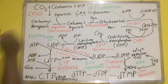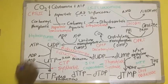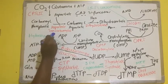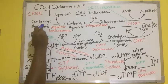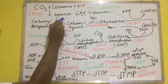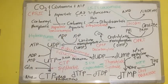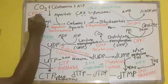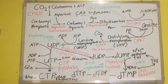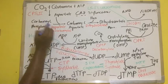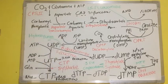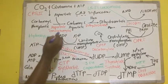This is the first step of pyrimidine synthesis. From there, the second step involves condensation of carbamoyl phosphate and aspartate by the enzyme aspartate transcarbamylase to produce carbamoyl aspartate. Now, this first step is the regulatory step of pyrimidine biosynthesis, while the second enzyme, aspartate transcarbamylase, is the rate-limiting step of this reaction.